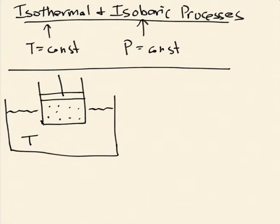The idea is that there's good thermal contact between these two systems. It's very difficult for the gas to change its temperature because as soon as it does, there's this large body next to it at a different temperature, and heat will flow to maintain an equal temperature. If the temperature in the gas tries to change, heat will flow very rapidly out of the water bath until the temperature is back to T. So we imagine that heat will flow to keep it always at temperature T. For that to be true, this heat bath needs to be very large, or alternatively have a very large heat capacity.